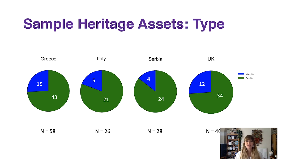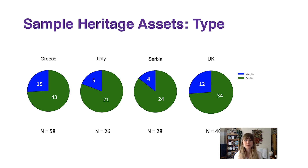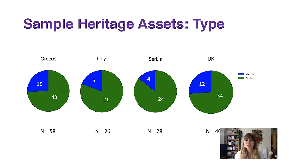When we look at heritage asset type by country: in Greece, 58 heritage assets were identified — 43 tangible and 15 intangible. In Italy, 26 heritage assets were identified, with 21 tangible and 5 intangible. In Serbia, 28 heritage assets were identified, with 24 tangible and 4 intangible — by far the highest tangible proportion relative to the other countries. And in the UK, 34 were tangible and 12 were intangible.